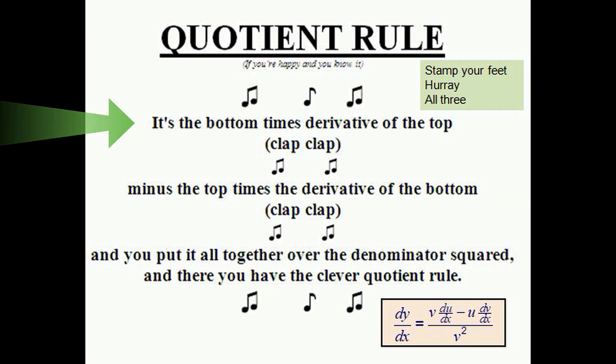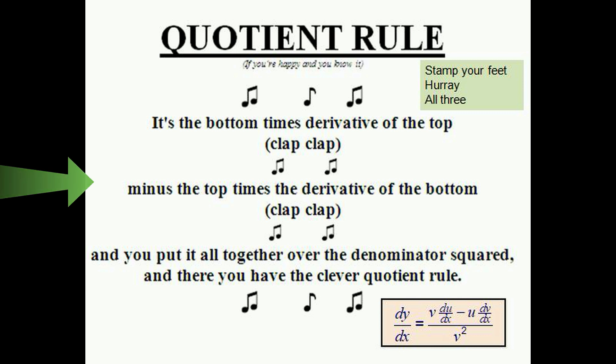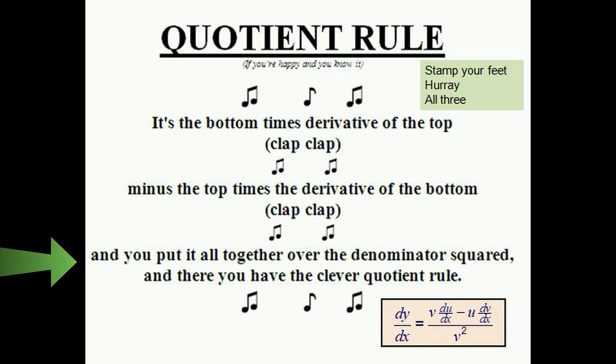It's the bottom times the derivative of the top, minus the top times the derivative of the bottom. And you put it all together over denominator squared. And there you have the clever quotient rule.